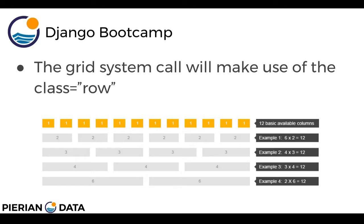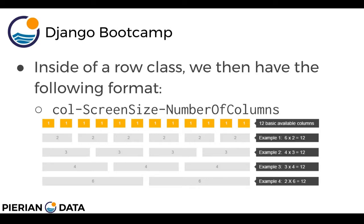The grid system makes use of the class equal to row. So we're going to see this class equals row call when we're actually coding examples. Inside of a row class, we then have the following format: col dash the screen size dash the number of columns. The screen size dictates what screen size you're referring to. There are a few basic screen sizes, and there's actually a little bit of a difference between Bootstrap 3 and Bootstrap 4 in this aspect. You can think of the screen sizes as basically large, medium, small, extra small, and now with Bootstrap 4 there's extra large. And then the third argument is the number of columns — how many columns you want to take up at this particular screen size.